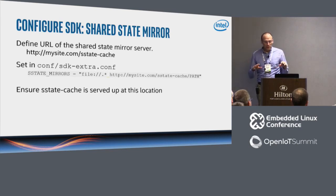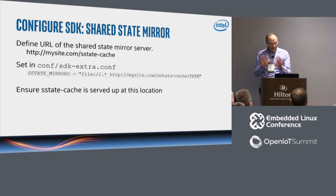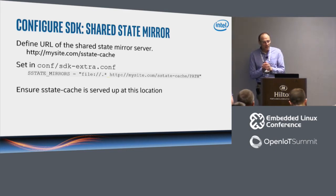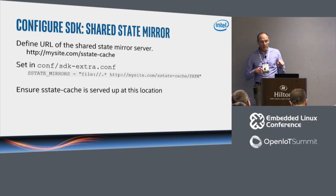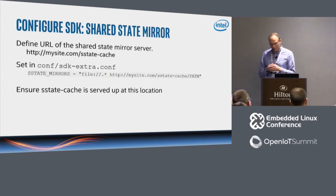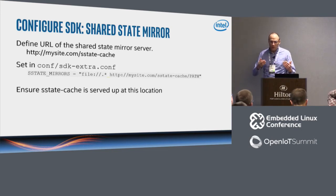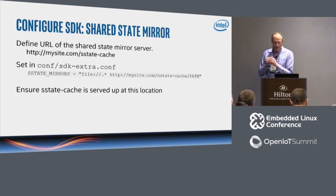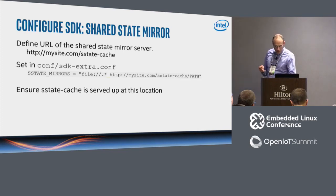As a distro developer, you need to make the sstate mirror available. The app developer doesn't need to know any of these URLs — it's all baked into the installer. You set a URL, but you have to use a special configuration file because you don't want it clashing with any sstate mirror you're using yourself as a distro developer. So it goes into a different file, sdkextro.conf. Then do your build and populate sdk_ext. After that, make sure the sstate cache is served up at the location you've defined.